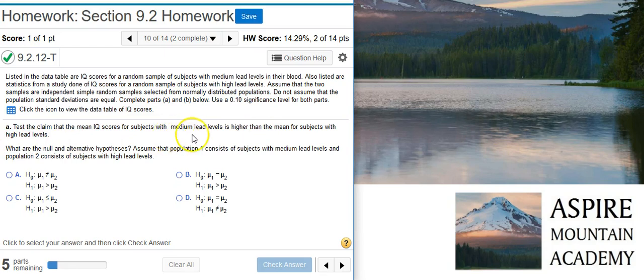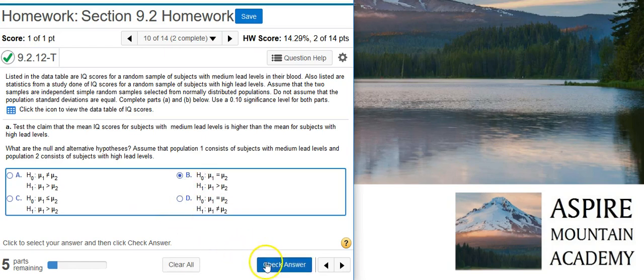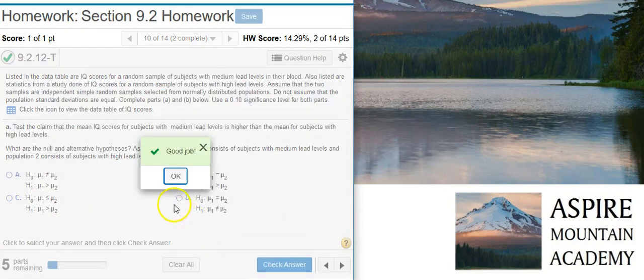We're testing the claim that the medium lead levels have a higher mean score than the high lead levels. So the medium lead levels, or population 1, will have a higher mean score than the high lead levels, or population 2. So μ1 will be greater than μ2. And that's what we see here with answer option B. The mean of population 1 is greater than the mean of population 2. So that's what we'll select for our answer. Good job!